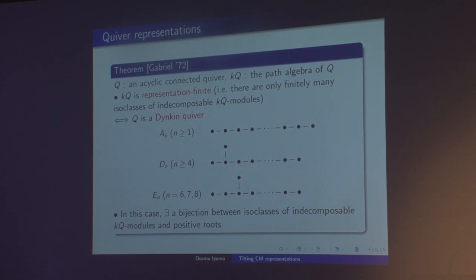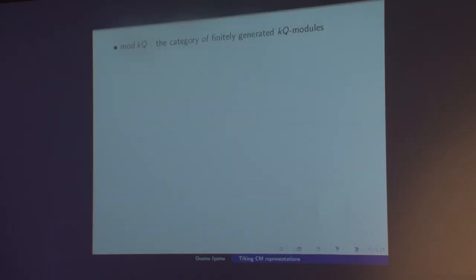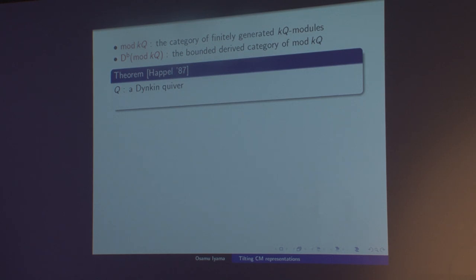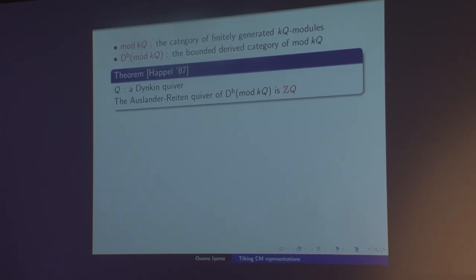To understand the structure of quiver representations it is reasonable to consider the derived category. I denote by mod KQ the category of finitely generated KQ modules, and by D^b(mod KQ) the bounded derived category of mod KQ. A classical result by Happel tells us that for a Dynkin quiver Q, the Auslander-Reiten quiver of the derived category of KQ is given by a certain infinite quiver ZQ constructed from Q.